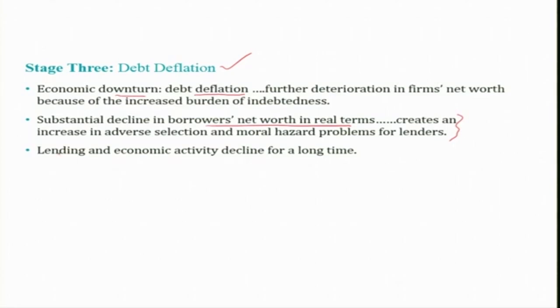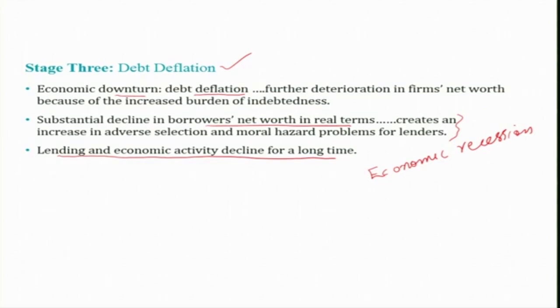In the long run, all of this leads to lending and economic activity declining for a long time. This is Stage 3: the economy ends up in an economic recession — the volume of economic activity is very low, leading to overall decline with low GDP, low employment, and so on. These are the three stages we just discussed. In the next session we will apply this framework and all the factors discussed in previous sessions to understand the 1929 Great Depression and the 2007-8 financial crisis in detail. Thank you and see you in the next session.